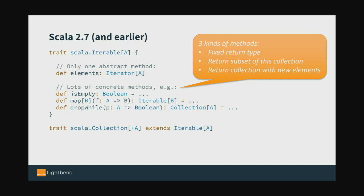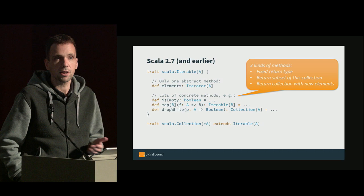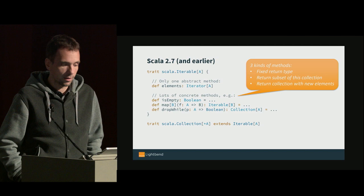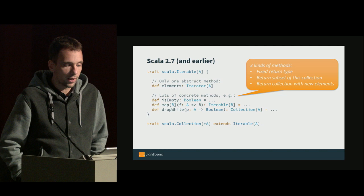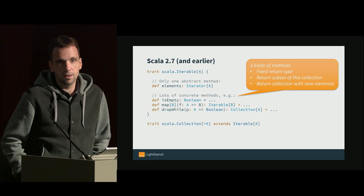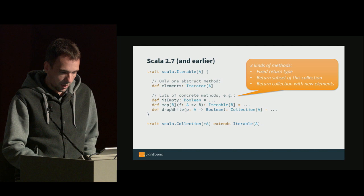First, there are simple methods that return some fixed return type unrelated to the collection type — for example, isEmpty always gives you a boolean. Then we have methods like dropWhile that give you a subset of the current collection, so if defined on an Iterable of A, we expect another Iterable of A. Thirdly, we have methods that, for a collection of type A, give you a new collection of type B — for example, map. We need to treat those methods differently if we want to get the design right.